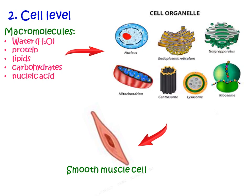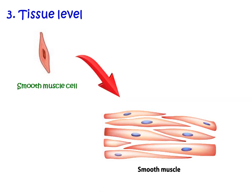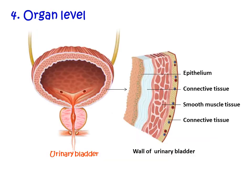The cell is the basic structural and functional unit of all organisms. The third is the tissue level of organization, where similar cells — such as epithelial, connective, smooth muscle, and nervous cells — are grouped together to make up tissues.